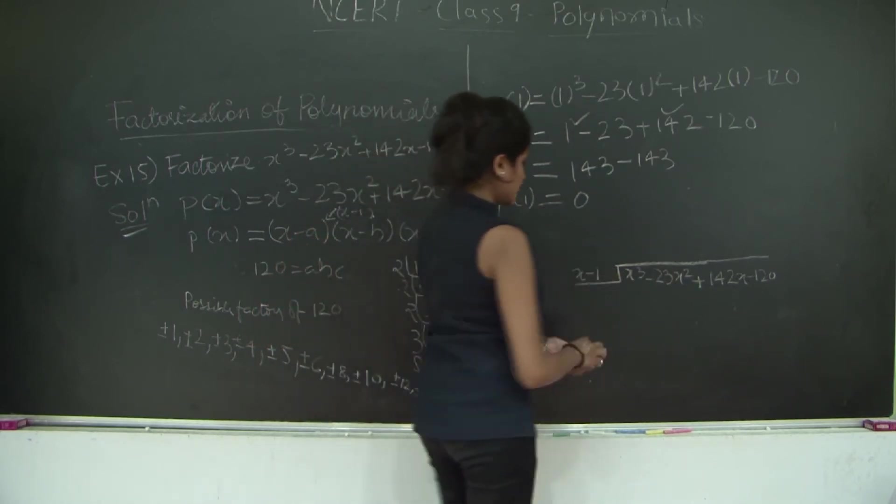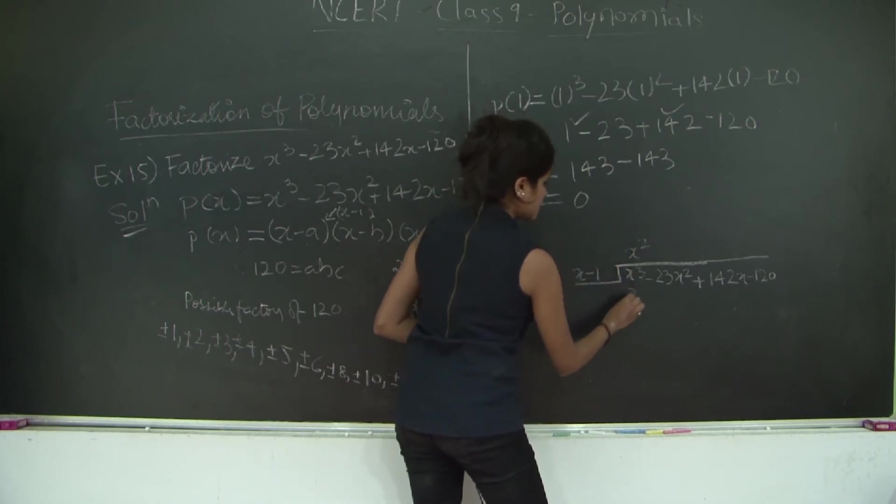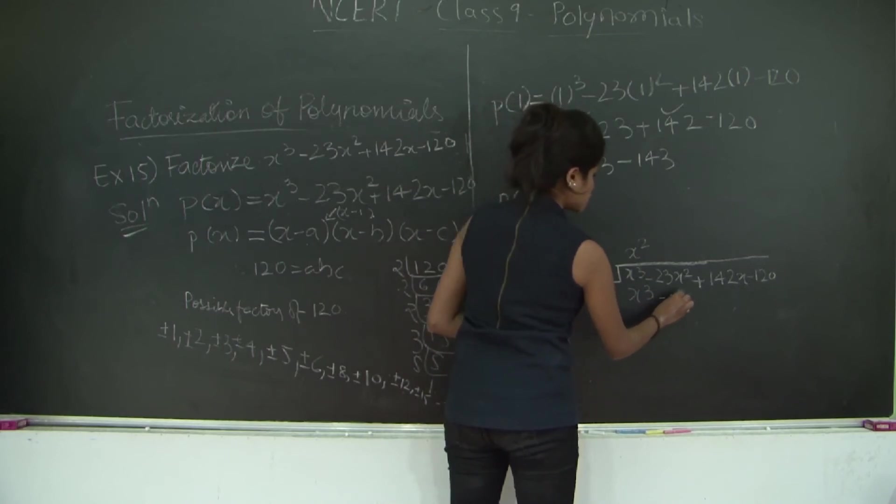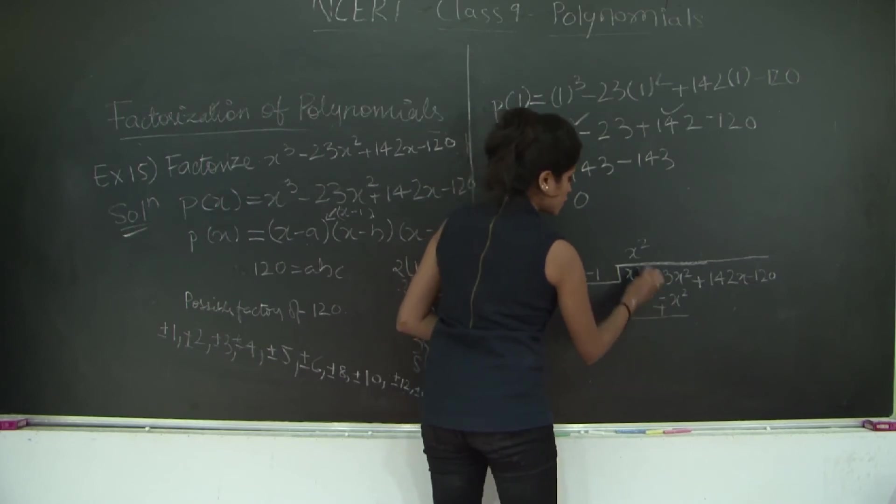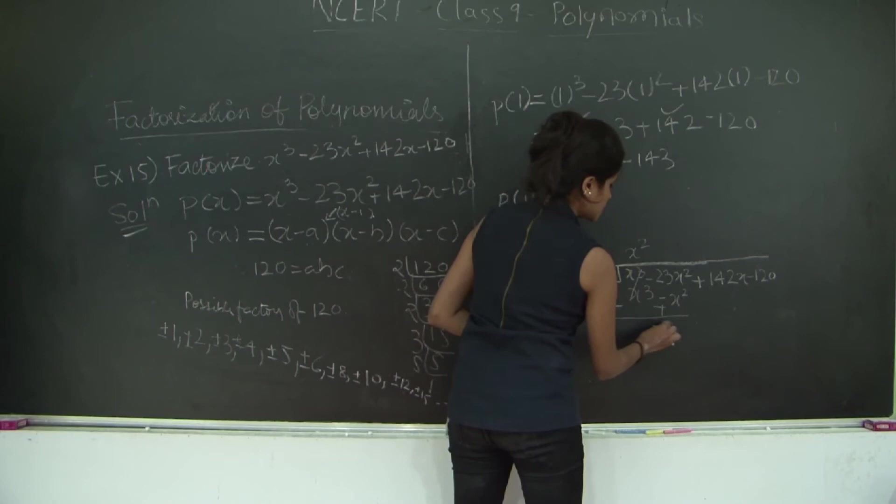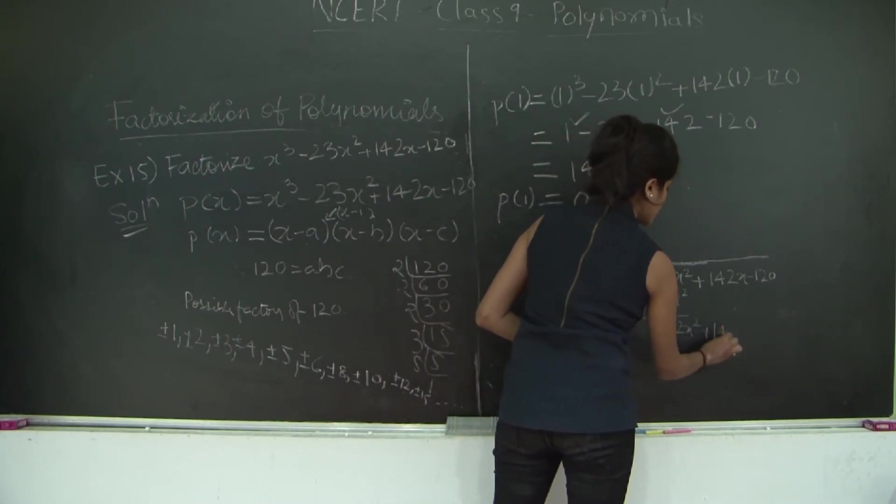So you have x³ - 23x² + 142x - 120 divided by x - 1. x times what will give me x³? x times x² will give me x³. Minus 1 times x² gives -x², so this becomes negative, this becomes positive. -23x² + x² = -22x² + 142x.